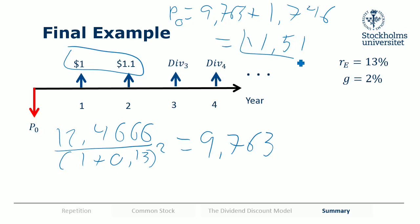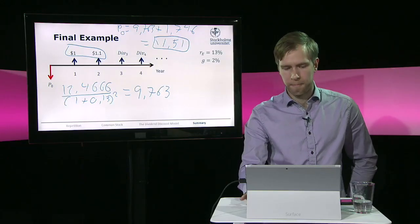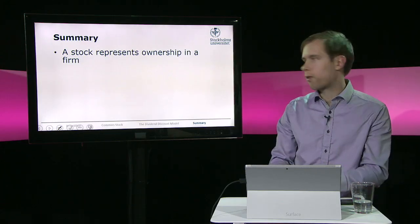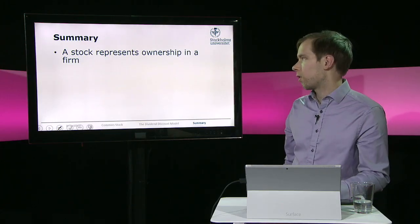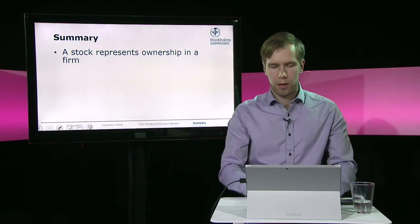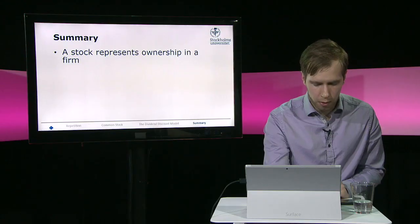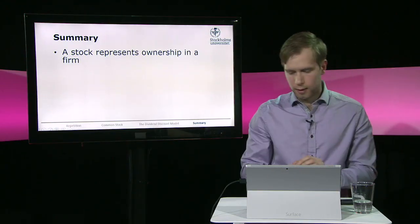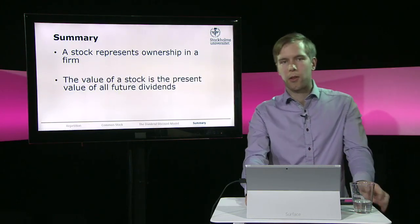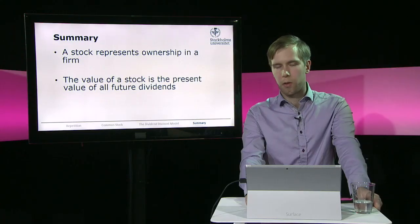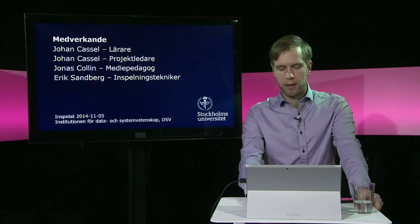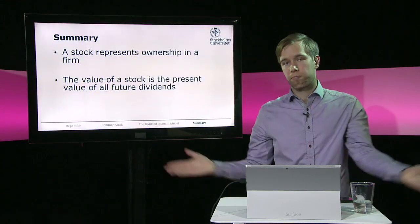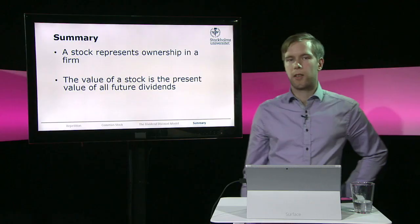We now know the value of this stock and have learned how to compute the price of a single stock using the dividend discount model. In summary: stocks represent ownership in a firm. The value of a stock according to this model is the present value of all future dividends. That's it for this video — see you in the next one.